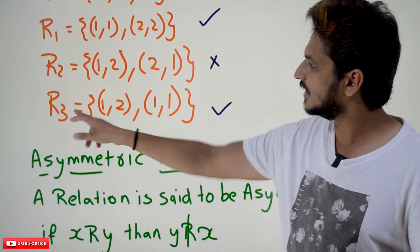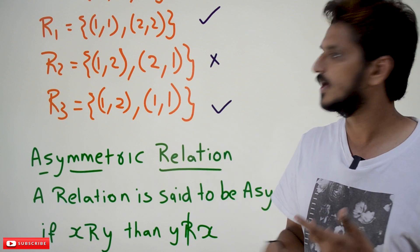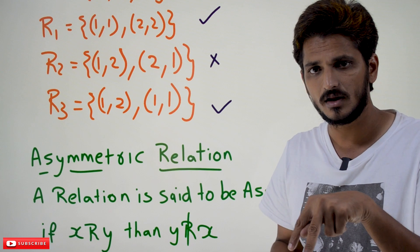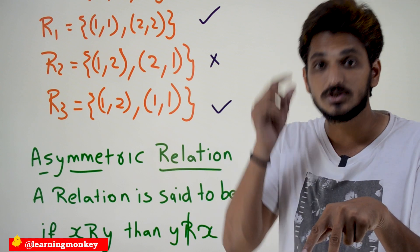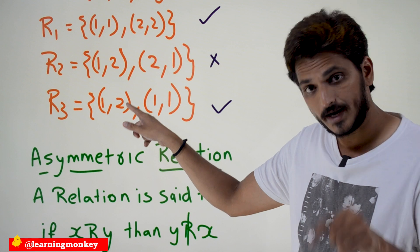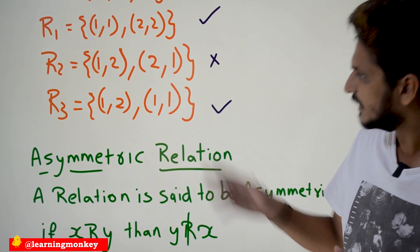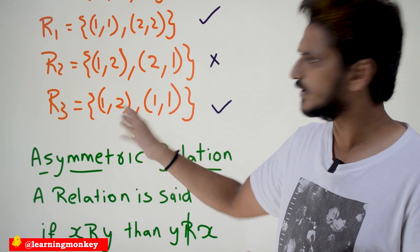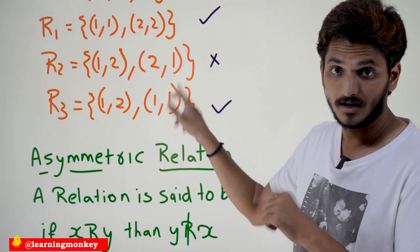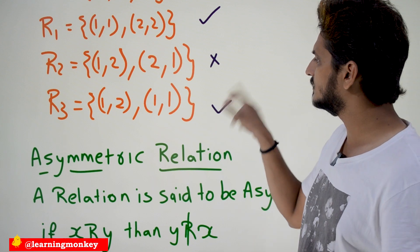Coming to the next one, the third example: {(1,2), (1,1)}. Is it an anti-symmetric relation? Yes, it is. For the pair (1,2), x relates y, but there is no pair (2,1) — y relates x — in the relation. If both x relates y and y relates x happen, then only you check for x equal to y. Since (2,1) is not there, no need to check. And for (1,1): x relates y and y relates x, then x equals y — yes. So it is an anti-symmetric relation.